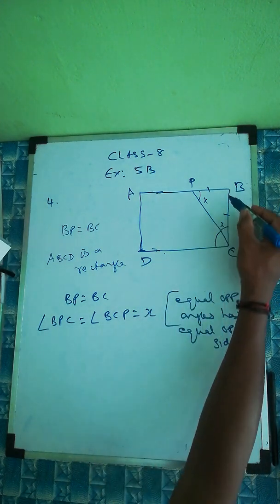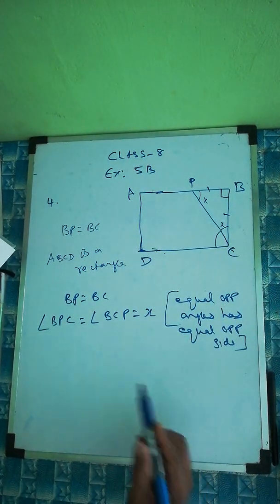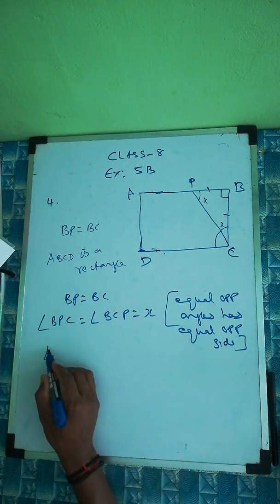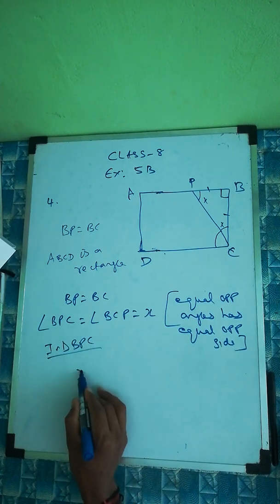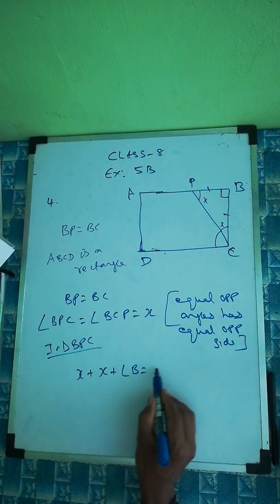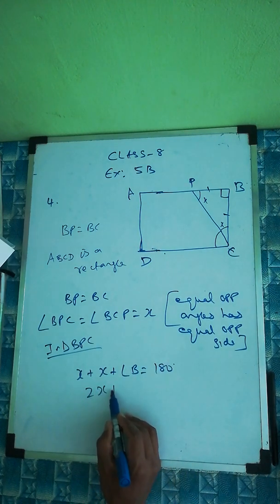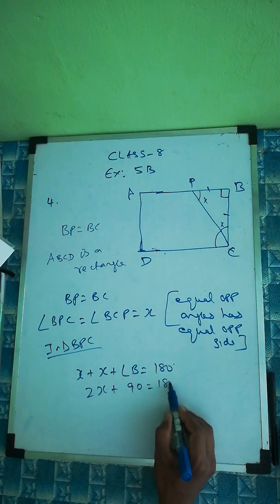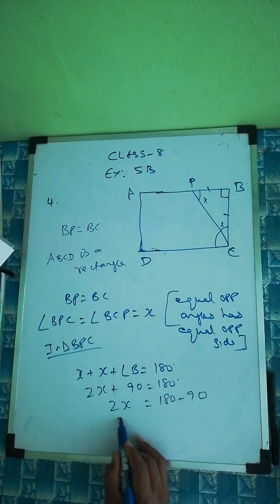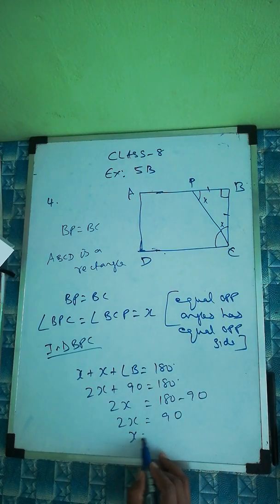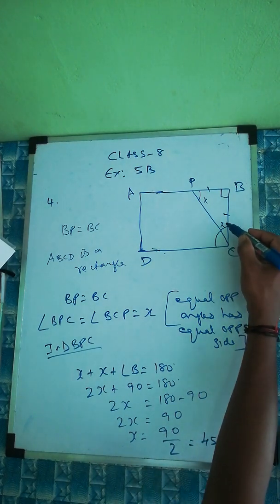In a rectangle, all angles are 90 degrees. So in triangle BPC, we can write X plus X plus angle B equals 180 degrees. That gives us 2X plus 90 equals 180, so 2X equals 90, and therefore X equals 45 degrees.